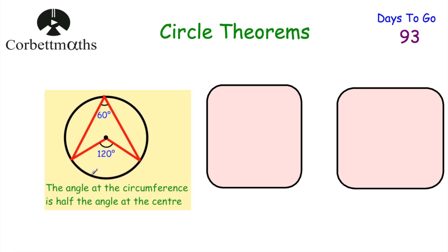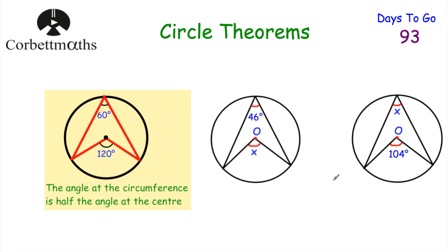Our next circle theorem is that the angle at the circumference is always half the angle at the centre. So if you've got the centre of the circle with two radii going to points on the circumference, and two chords meeting at a point on the circumference, the angle at the centre will be double the angle at the circumference, or the angle at the circumference will be half the angle at the centre.